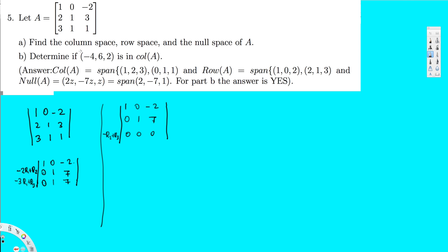The first question is asking us to find the column space. Column space is basically the columns with the pivots. The first column has a pivot, the second column has a pivot, but the third column doesn't. So these are the two columns in the column space. Therefore, column space of A equals the span of the first column (1, 2, 3) and the second column (0, 1, 1).